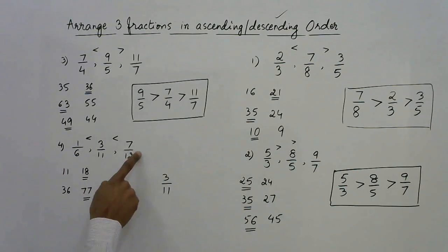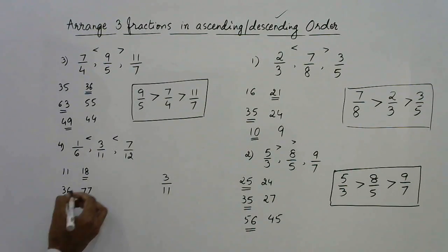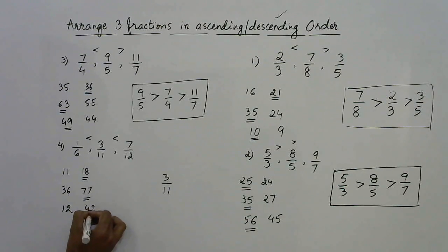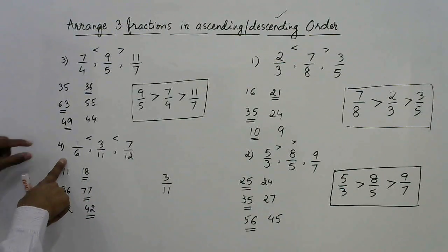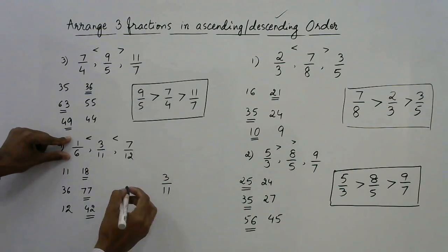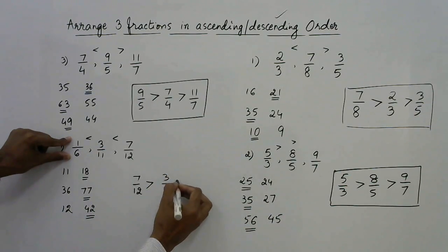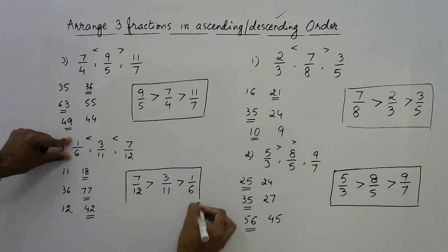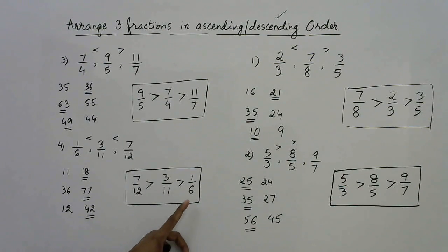To determine whether 1/6 or 7/12 is larger, compare them directly: 1 × 12 = 12 and 7 × 6 = 42. Since 42 is greater on the right, 7/12 is greater than 1/6. And 7/12 is already greater than 3/11, so the descending order is: 7/12 > 3/11 > 1/6.